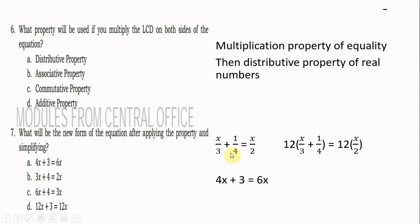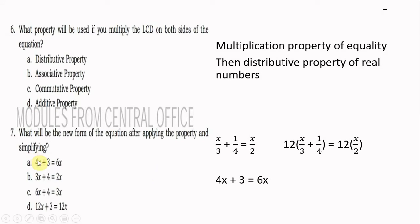Number 7: What will be the new form of the equation after applying the property and simplifying? Starting with x/3 + 1/4 = x/2, the LCD is 12. Multiplying 12 on each side: 12÷3 = 4 times x gives 4x; 12÷4 = 3 times 1 gives 3; 12÷2 = 6 times x gives 6x. So the new form is 4x + 3 = 6x, which is letter A.